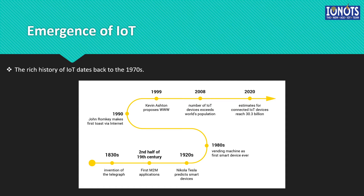In 2005, the UN's International Telecommunications Union, ITU, published its first report on the topic of IoT. In 2008, the Internet of Things was officially born. And in 2011, Gartner, the market research company, included the Internet of Things technology in their research.